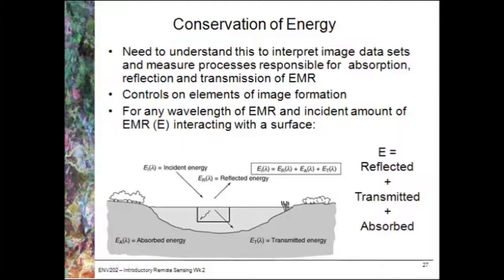So if more energy or light is reflected, that means less is transmitted or absorbed. If more is absorbed, less is transmitted and reflected. Now this actually affects different features in our images and what we see.